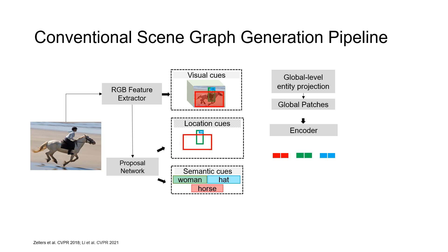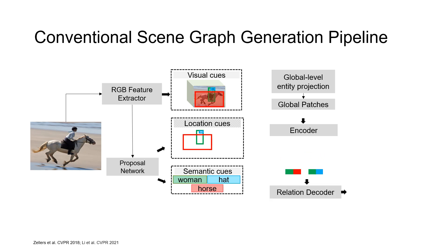For instance, to establish a woman riding horse relationship, the subject part of the woman's patch in green merges with the object part of the horse's patch in red. This combined entity patch then goes through the relation decoder network, resulting in the riding relation. Similarly, we get the wearing relation for the woman and hat entities.